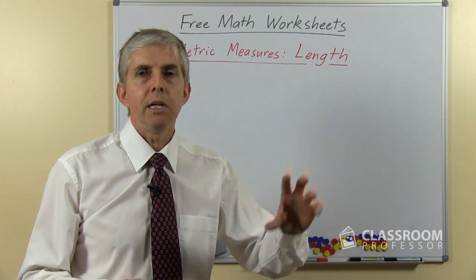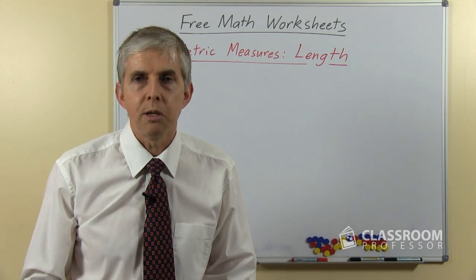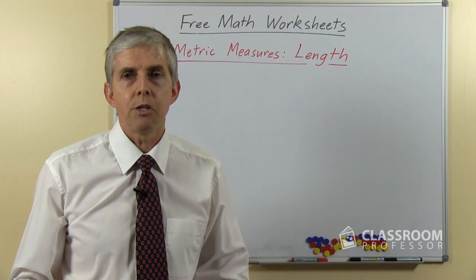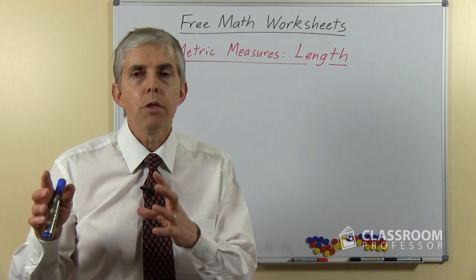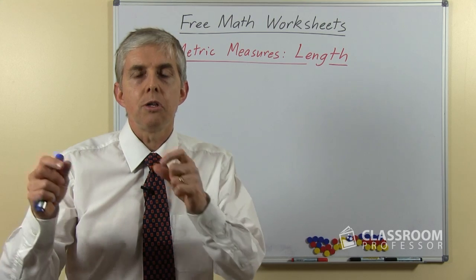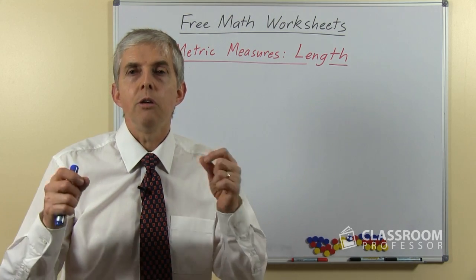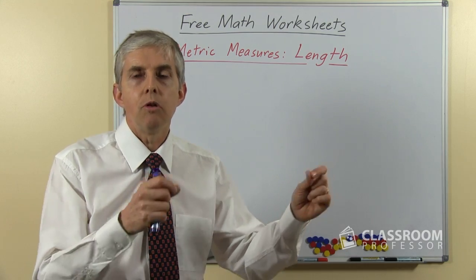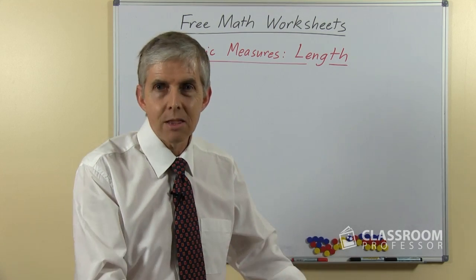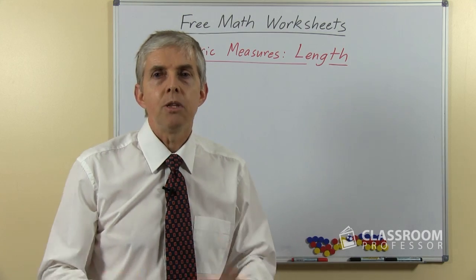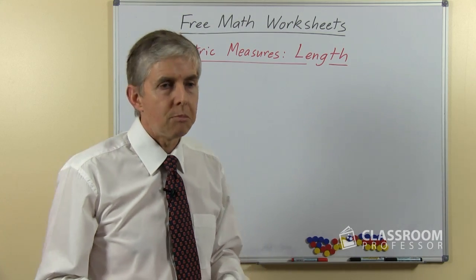Meters and centimeters and kilometers and so on is a system of measurement that is used in many countries of the world, and all the numbers that are used to change one unit to another are based on ten. So we use ten or a hundred or a thousand, sometimes ten thousand, sometimes a million, but they're all nice easy round numbers.